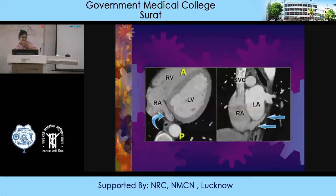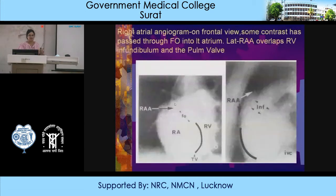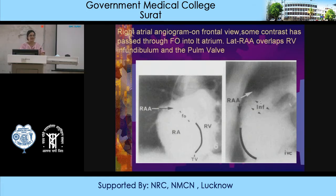This is a selective right atrial angiogram showing how the right atrium is situated in the thoracic cavity. On the frontal view you can see the right atrium, the tricuspid valve, and the right ventricle situated more anteriorly. On the lateral view, only the right atrial appendage is projected and is seen to overlap the infundibulum and the pulmonary valve.